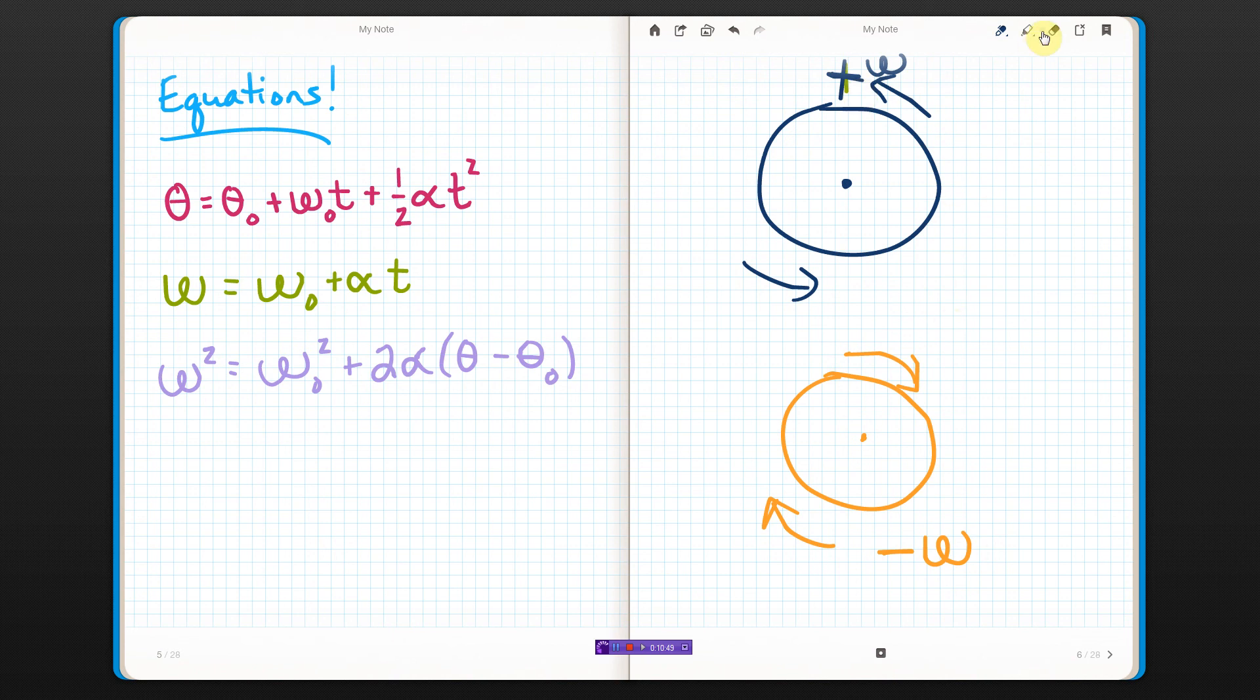Think of it more like a unit circle. You remember that unit circle from algebra 2, like this was zero and then you went that way around. So that's positive, and negative is the other way.